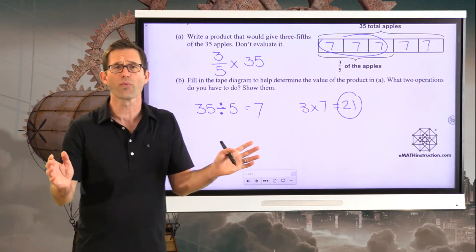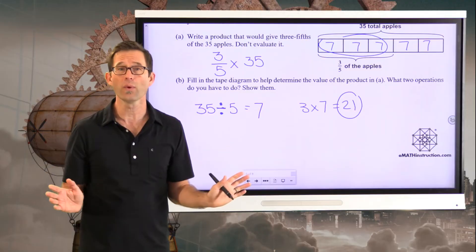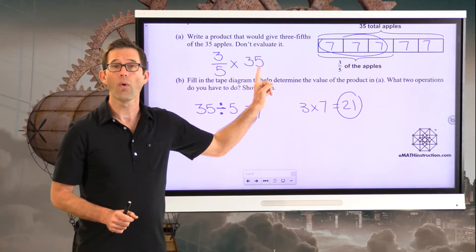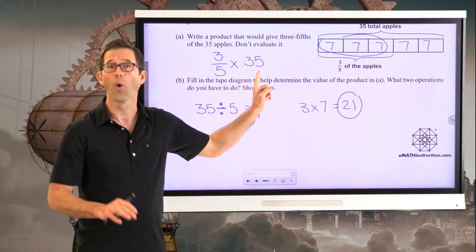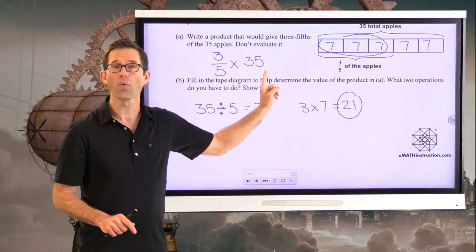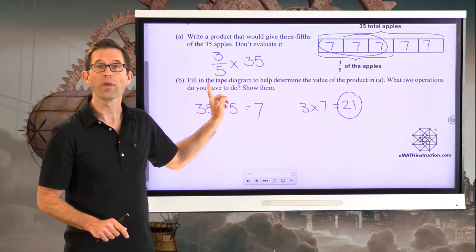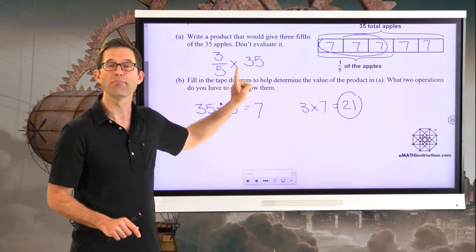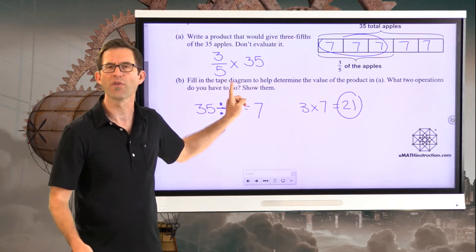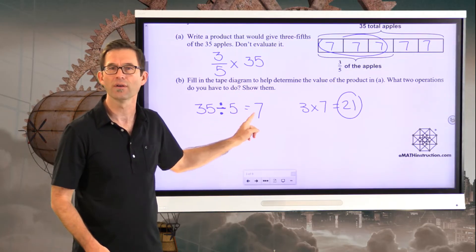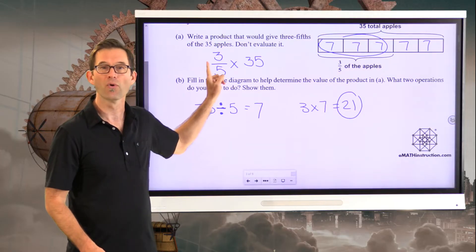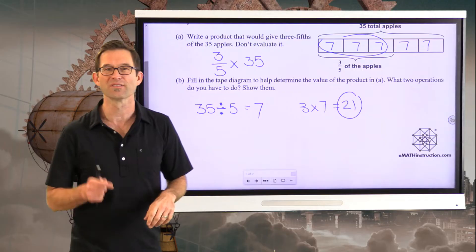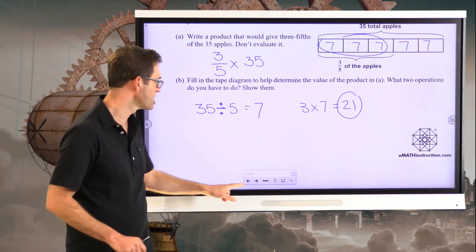And that is the thrust of everything we do today. When we multiply a whole quantity by a fraction, we first divide the whole quantity to find that base unit — one-fifth of 35, which is seven — and then we multiply by three. Let's keep working with this to make sure you understand the idea.